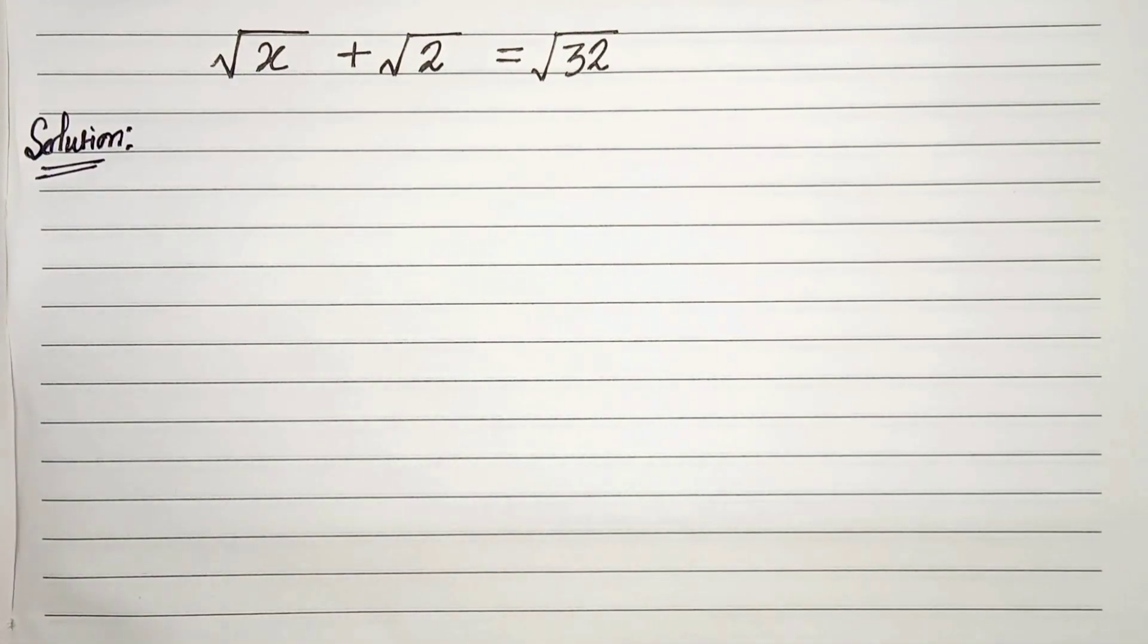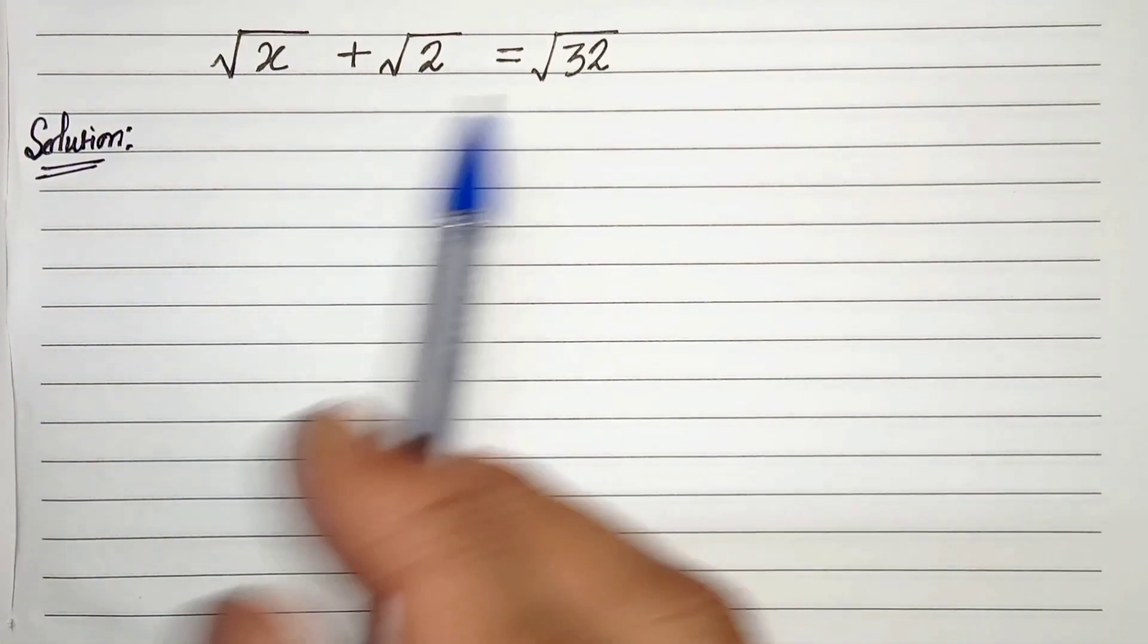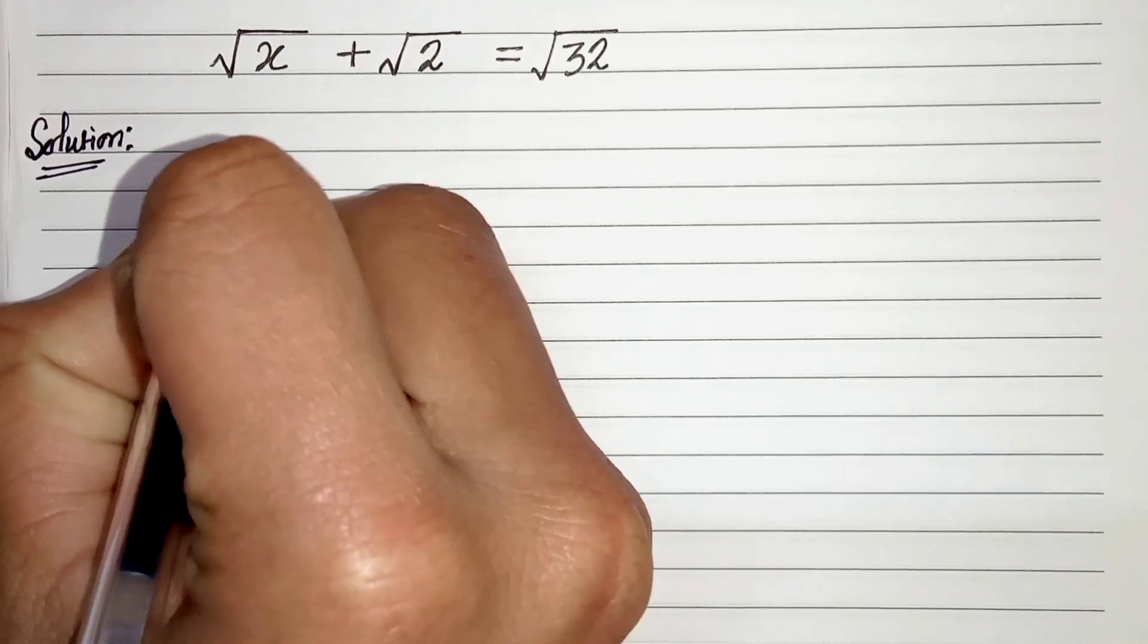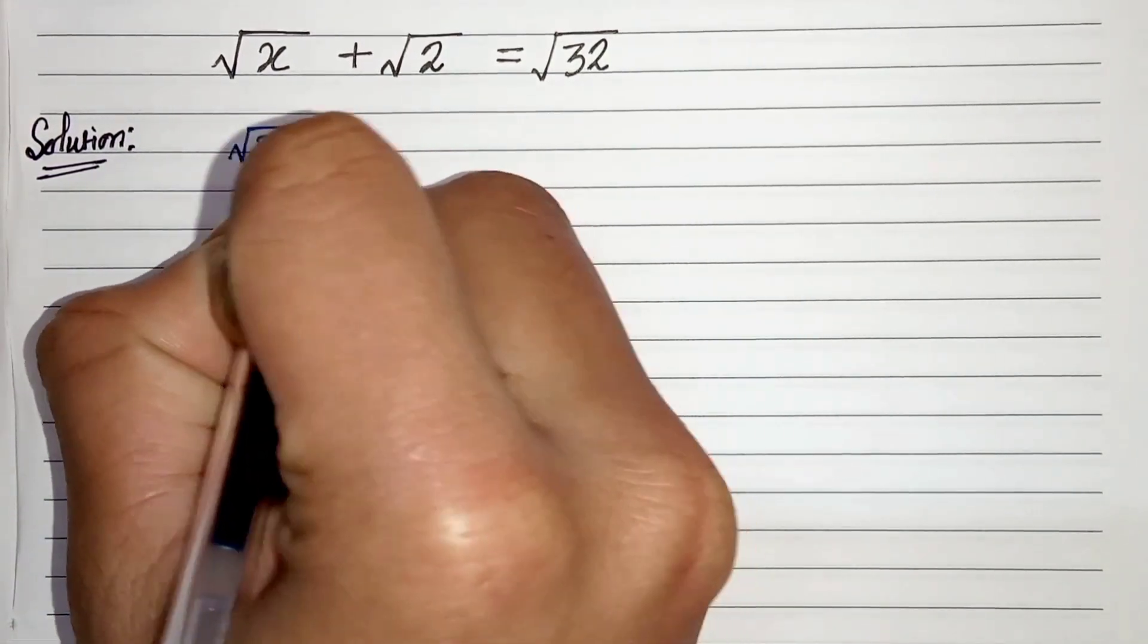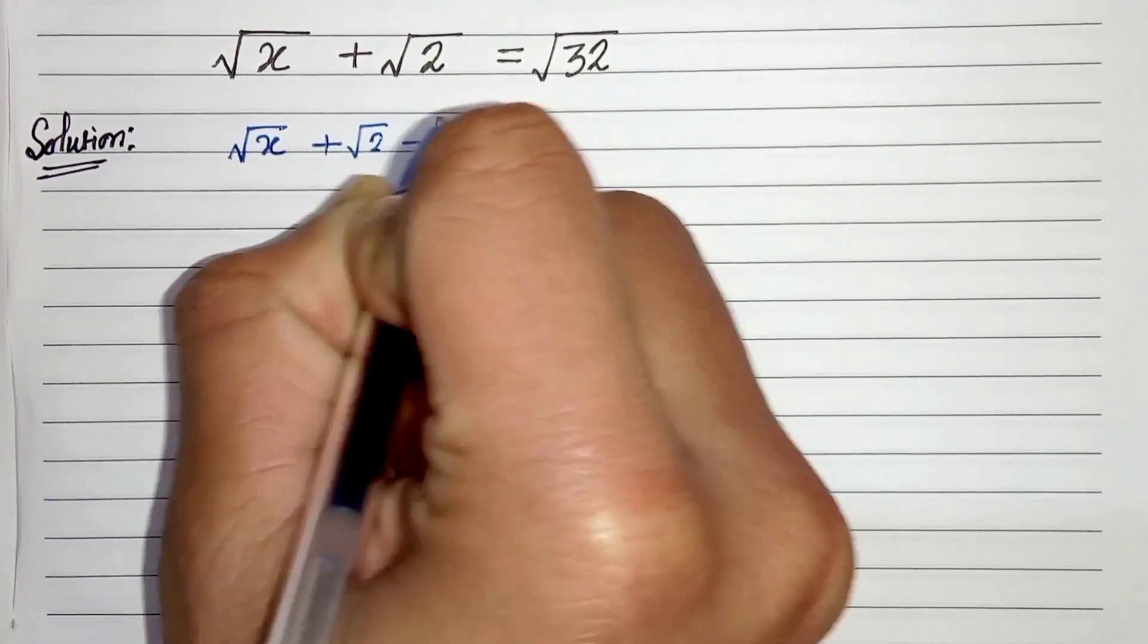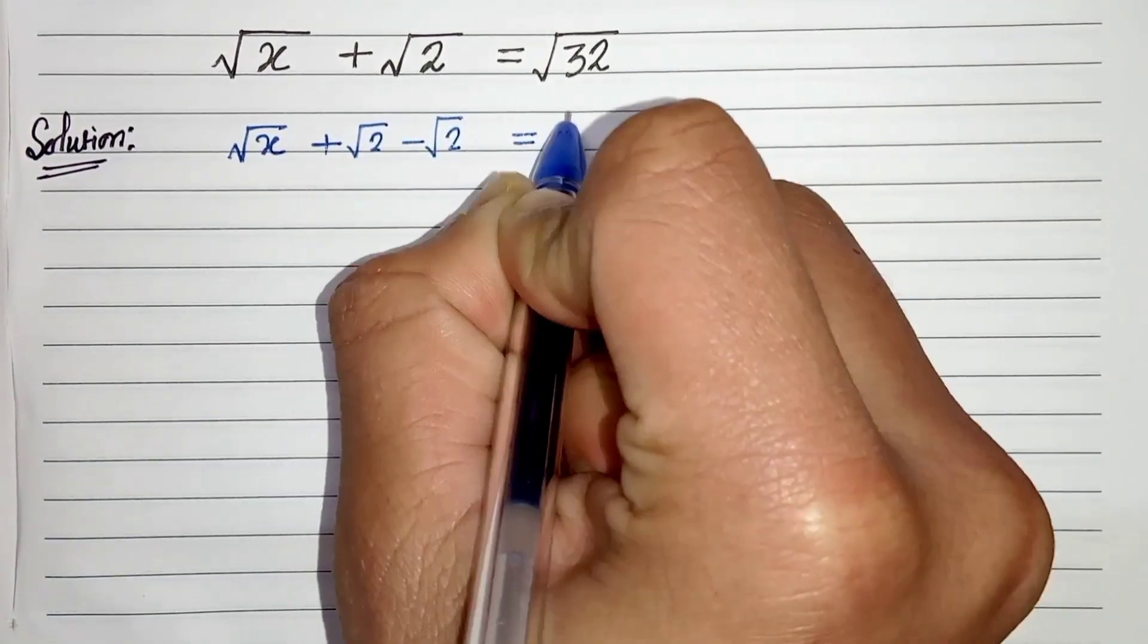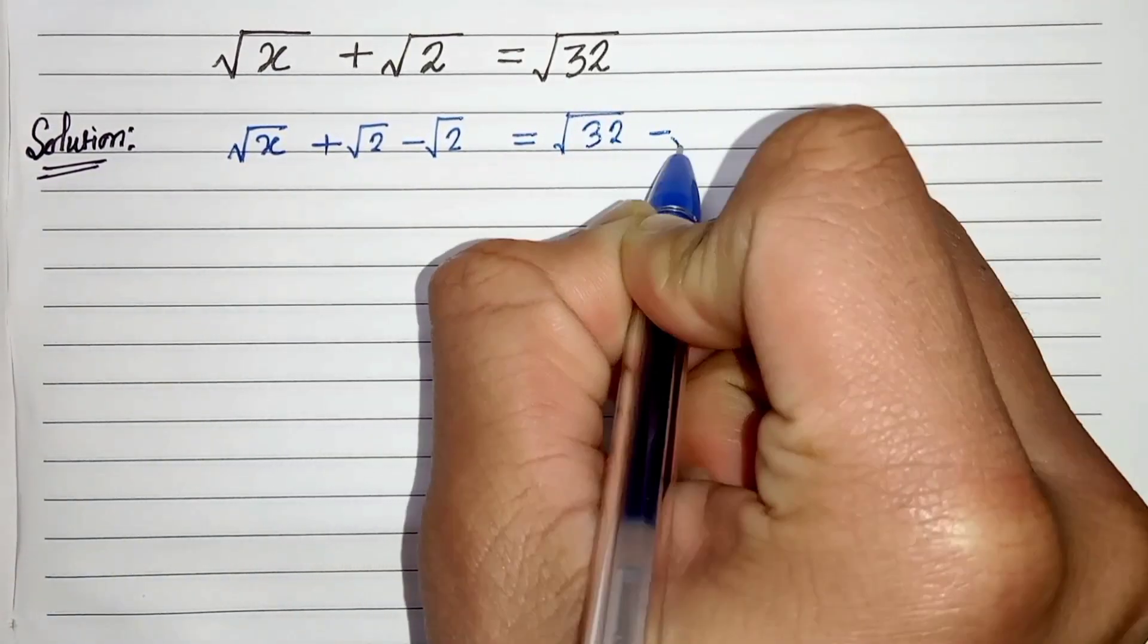First of all, we will subtract √2 from both sides of the equation. So √x + √2 - √2 equals √32 - √2.